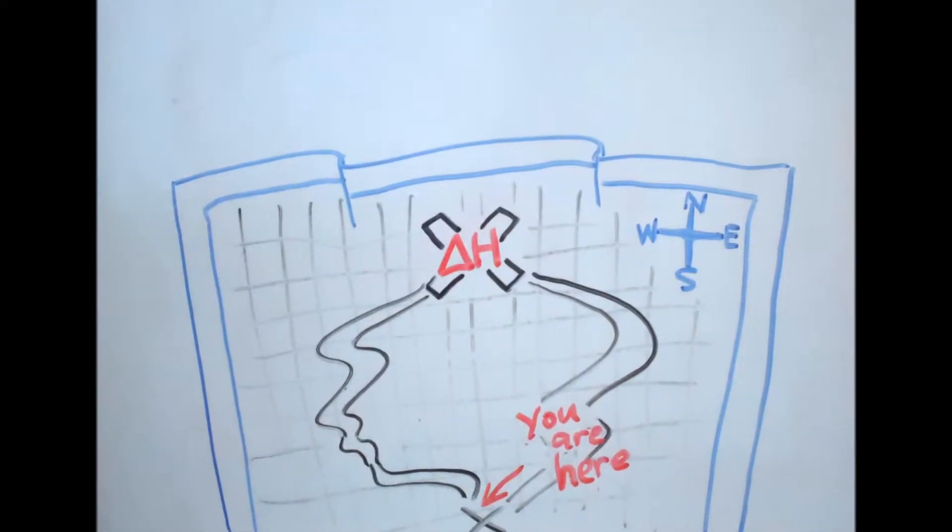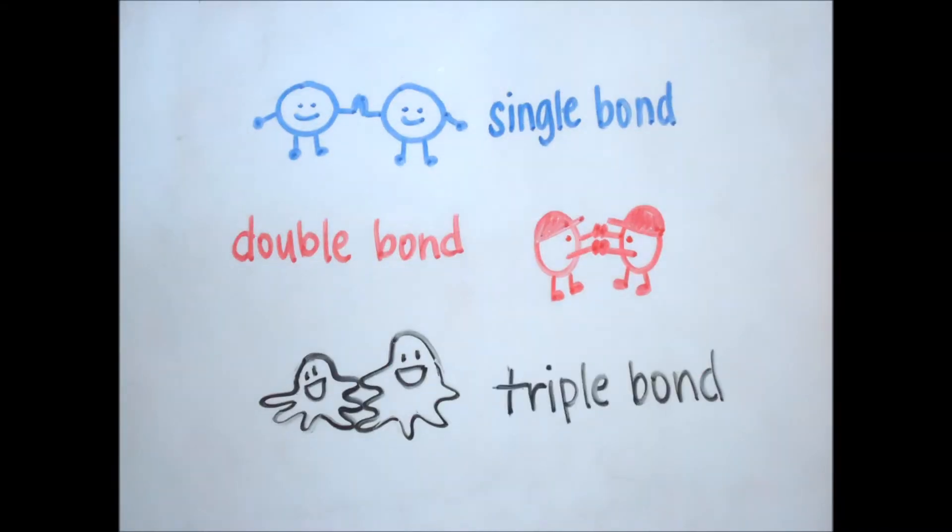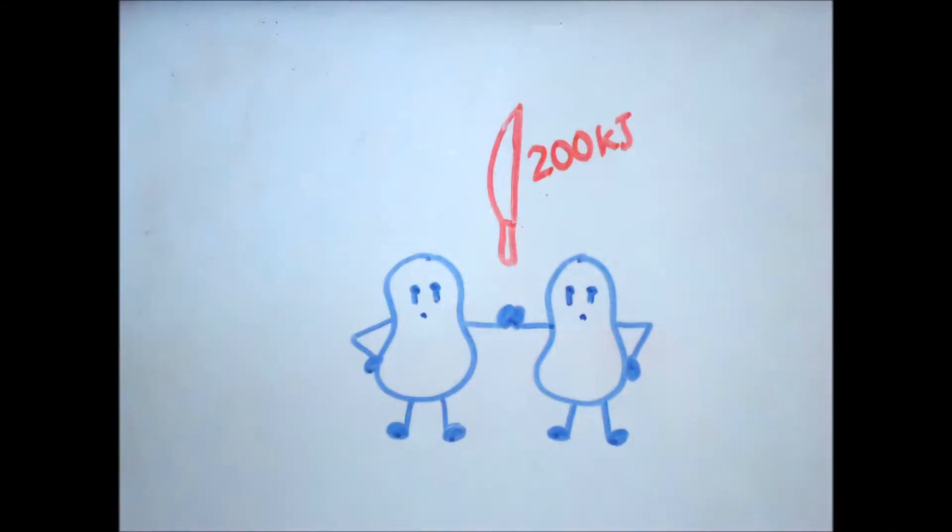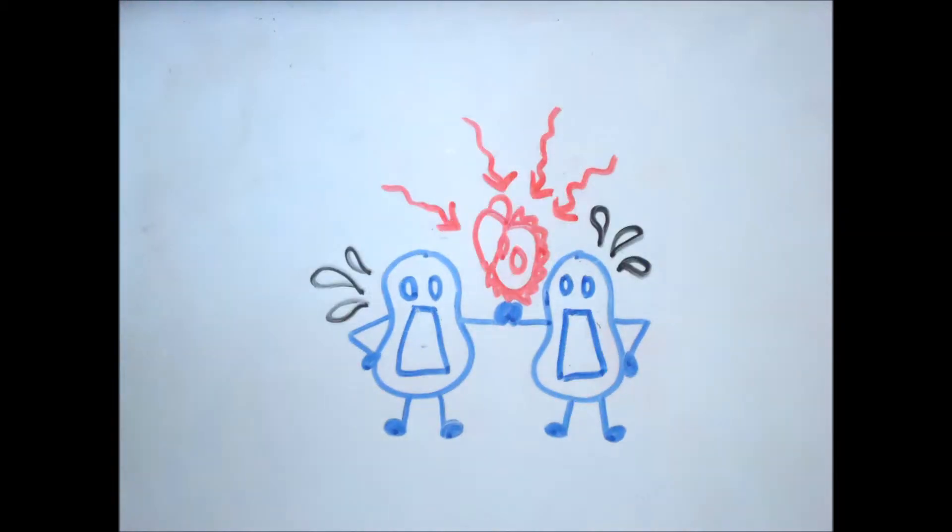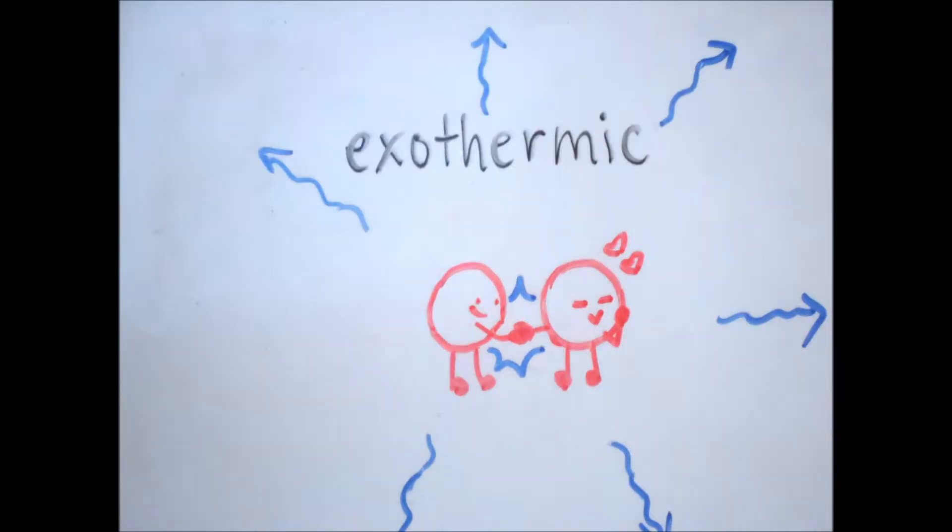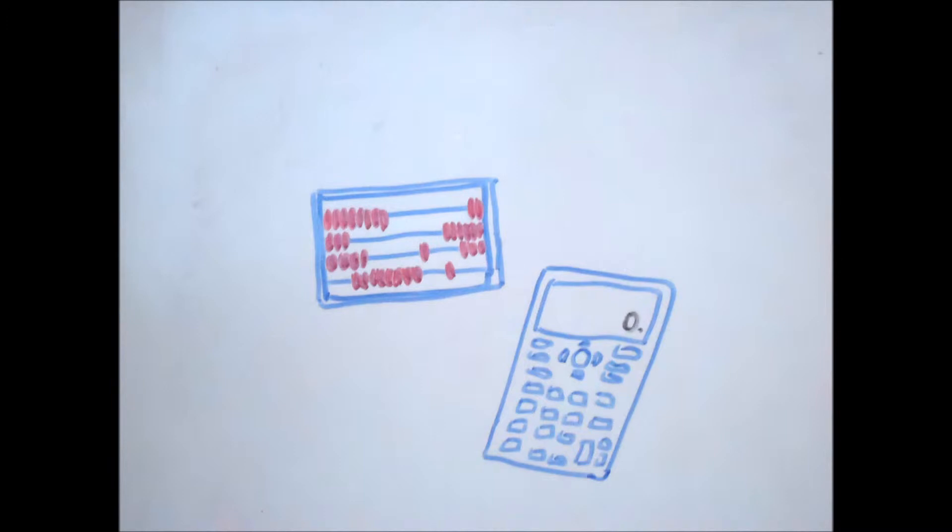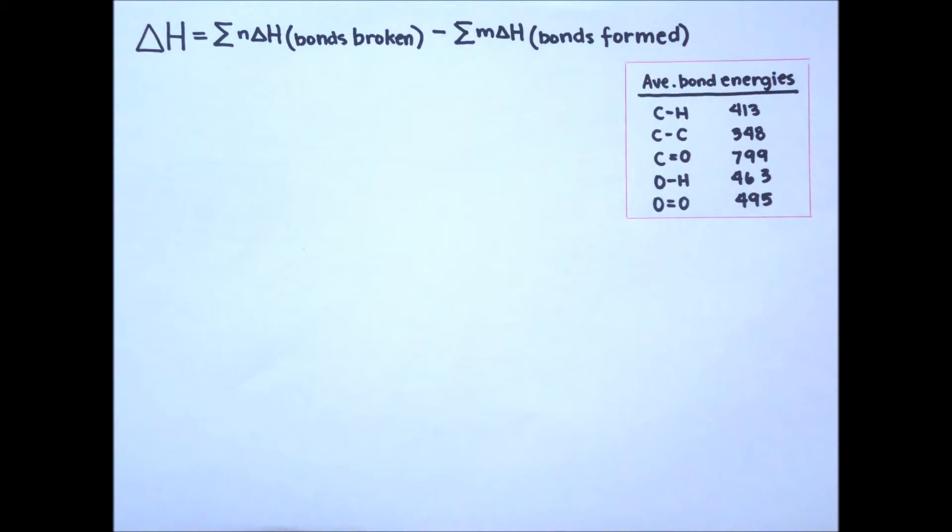There are multiple ways in finding the change in enthalpy for a combustion process. One way is by using bond energies. Bond energy is the energy required to break one mole of covalently bonded atoms. Breaking bonds absorb heat and is endothermic, while forming bonds releases heat and is exothermic. Calculating the change in enthalpy of a reaction using bond energies can be expressed with this equation. In this calculation, we can refer to our table of average bond energies.